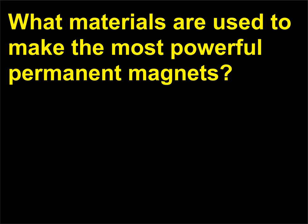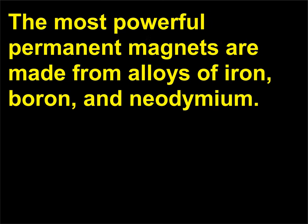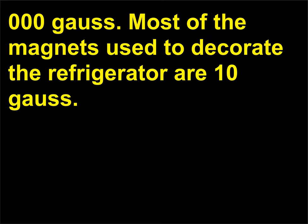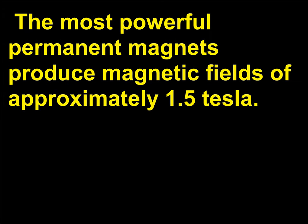What materials are used to make the most powerful permanent magnets? The most powerful permanent magnets are made from alloys of iron, boron, and neodymium. Magnetic strength is measured in units called tesla and gauss; 1 tesla equals 10,000 gauss. Most of the magnets used to decorate the refrigerator are 10 gauss. The most powerful permanent magnets produce magnetic fields of approximately 1.5 tesla.